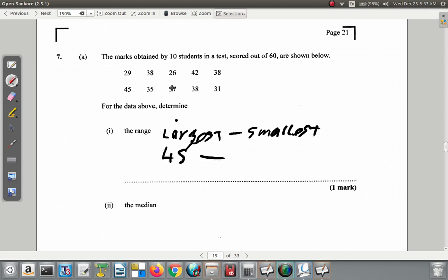45 looks like the highest, 45 minus... what's the lowest? Lowest would be in their 20s. 20s, 26, 29, 26.